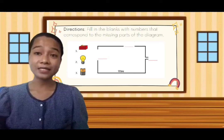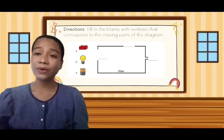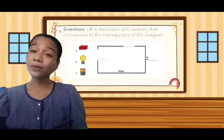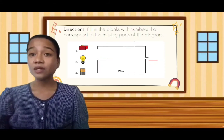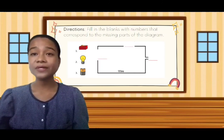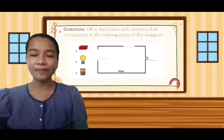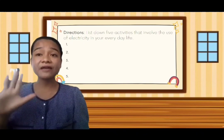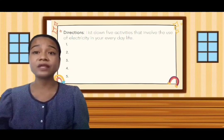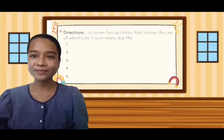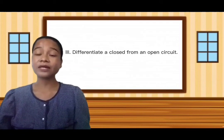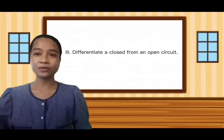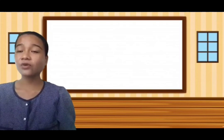For the first part of our assessment today, fill in the blanks with numbers that correspond to the missing parts of the diagram. Number one: we have the switch. Number two: we have the bulb. Number three: we have the battery. For the second part, list down five activities that involve the use of electricity in your everyday life. For the last part, in your own words, differentiate an open from a closed circuit. Are there any clarifications or questions?